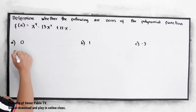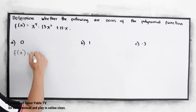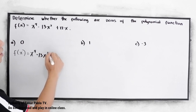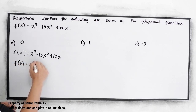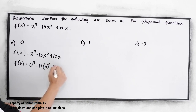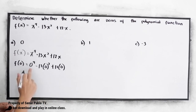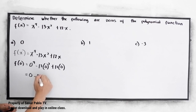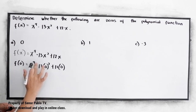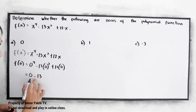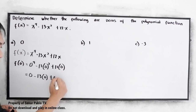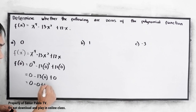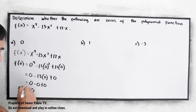For letter a, f of 0 is equal to 0 raised to 4 minus 13 times 0 squared plus 12 times 0. Zero raised to 4 is 0, minus 13 times 0 is 0, plus 12 times 0 is 0. So we have 0 minus 0 plus 0, which gives us 0. So f of 0 is equal to 0. Therefore, 0 is a zero of the given polynomial function.